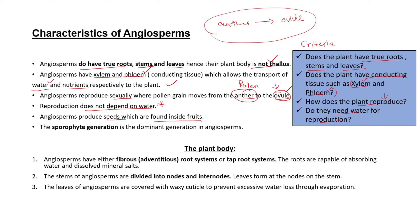Another characteristic is that angiosperms produce seeds which are found inside fruit. When the pollen moves from the anther and goes to the ovule, a seed is created, and that seed will be enclosed inside fruit. So the fruit is on the outside and the seed is inside — angiosperms produce both seeds and fruits.